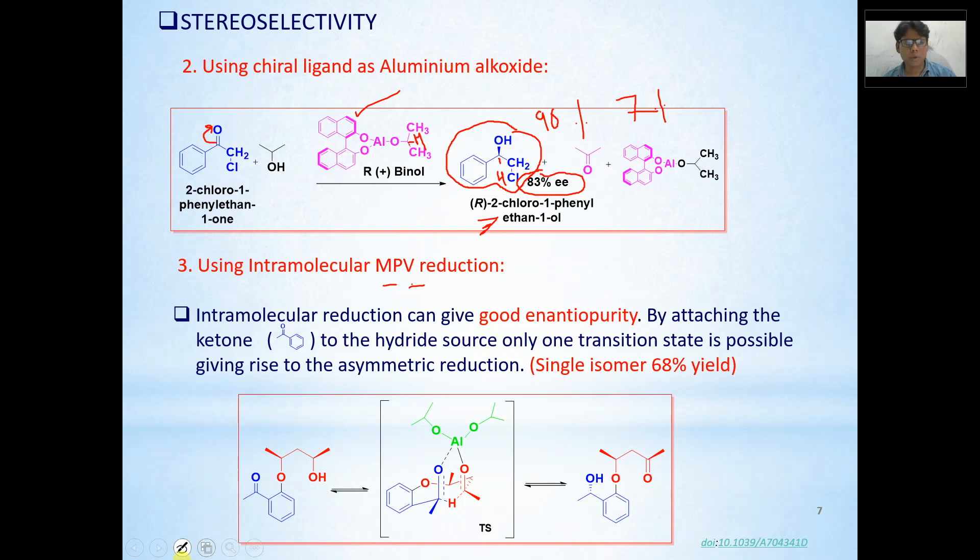Let us begin with intramolecular MPV reduction. Intramolecular reduction can give good enantiomeric purity. The reason being there is possibility of just one transition state. Why it is so? It is so because this oxygen atom, it combines with the aluminum: oxygen, carbon and CH2 then carbon. Hydride integrates with this and attacks this carbonyl. In a way, a very rigid kind of structure is going to be formed. This transition state is very rigid. Ultimately we always get only one product in 68% yield but more than 95% of EE. Because single product is formed and there is no possibility of any other product.